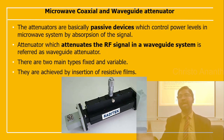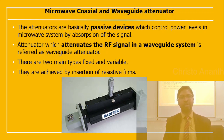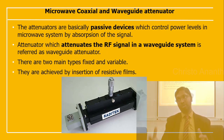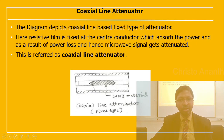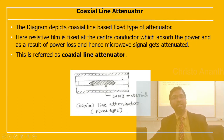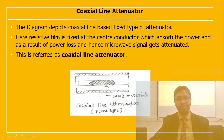Microwave coaxial and waveguide attenuators are passive devices that control power levels in the microwave system by absorption of the signal. A waveguide attenuator attenuates the radio frequency signal in a waveguide system. There are two types — fixed and variable — and attenuation is achieved by the insertion of resistive films. In the coaxial line fixed type, the resistive film is fixed at the center conductor, observing the power and causing signal attenuation.